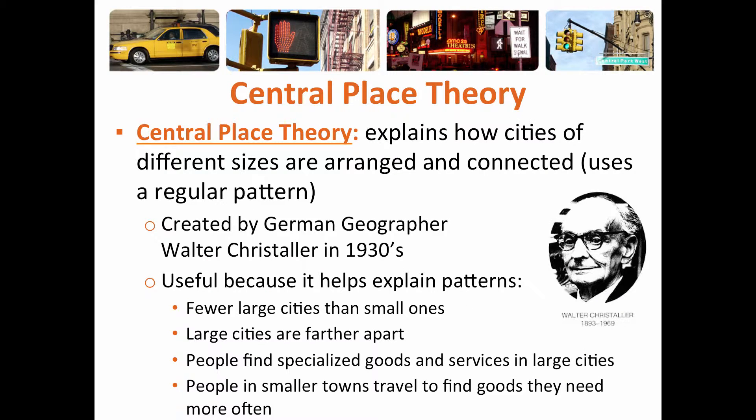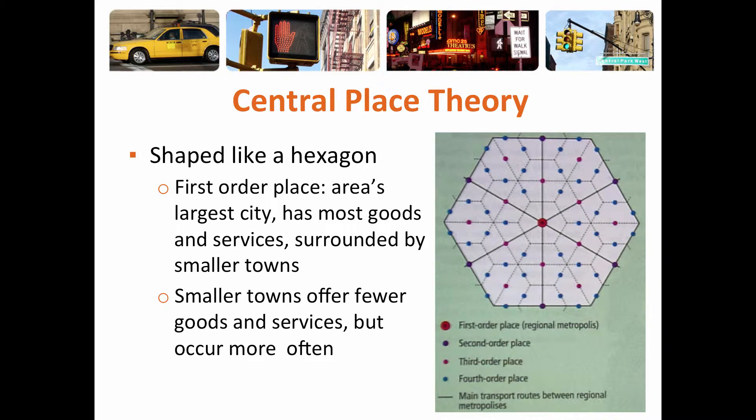That leads us to Central Place Theory, which explains how cities of different sizes are arranged and connected in a pattern. It was created by a German geographer named Walter Christaller in the 1930s. It explains that there are fewer large cities than small ones, that large cities are much farther apart than small cities, and that people find specialized goods and services in large cities. Central Place Theory is based on a hexagon shape because a circle would either overlap or have gaps, and we have to make sure all cities are connected to each other. So hexagons fit together, and Christaller used hexagons.